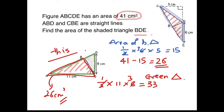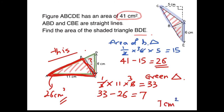And to find the small shaded portion, I just have to take the total of the green triangle and subtract what I found just now, which is the red portion — 26. And my answer is 7. So the area of the shaded triangle BDE is 7 square centimeters.